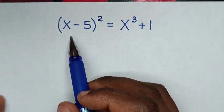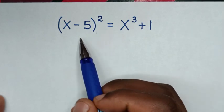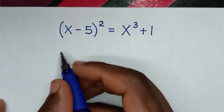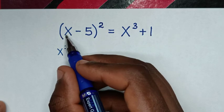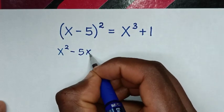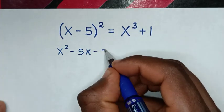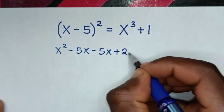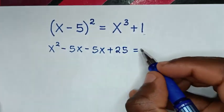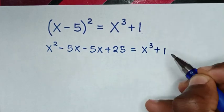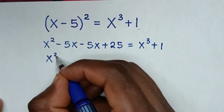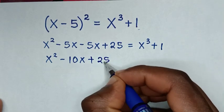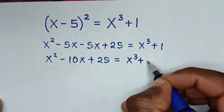First we will expand (x - 5)², which is the same as (x - 5) times itself. So x times x is x², then x times negative 5 is negative 5x, negative 5 times x is negative 5x, and negative 5 times negative 5 is positive 25. This equals x³ + 1. So we get x² minus 10x plus 25 equals x³ + 1.